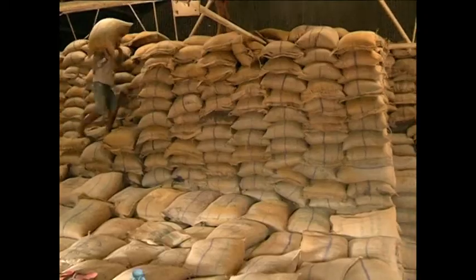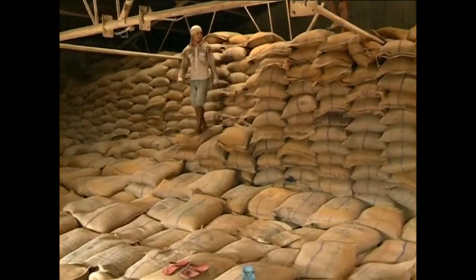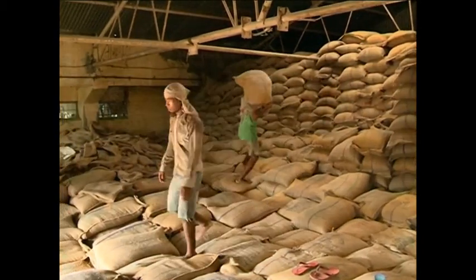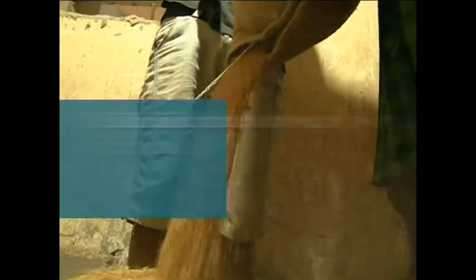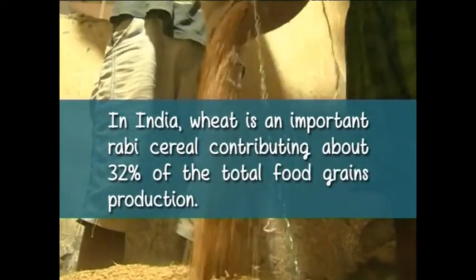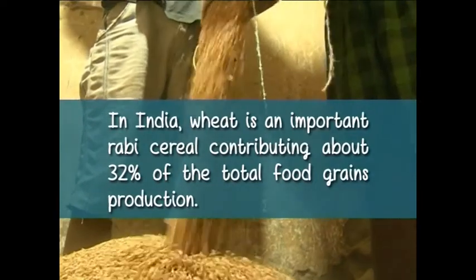After the green revolution in the 1970s and 1980s, the production of wheat has shown a huge increase. As per reports of the Food and Agriculture Organization in 2003, wheat ranks first in area and production in the world among cereals. South and East Asia contributed towards the increase in global wheat production. In India, wheat is an important rabi cereal, contributing about 32% of the total food grains production.